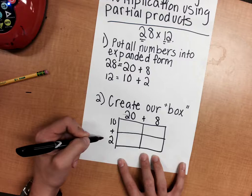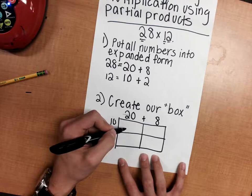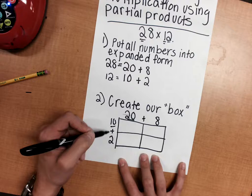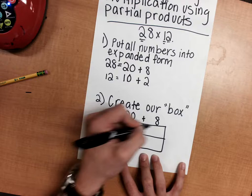Now I'm going to multiply the place values by each other. This first box on our top left is going to be reserved for 10 times 20, and 10 times 20 is 200. Next, we're going to multiply 10 times 8, and that's 80.